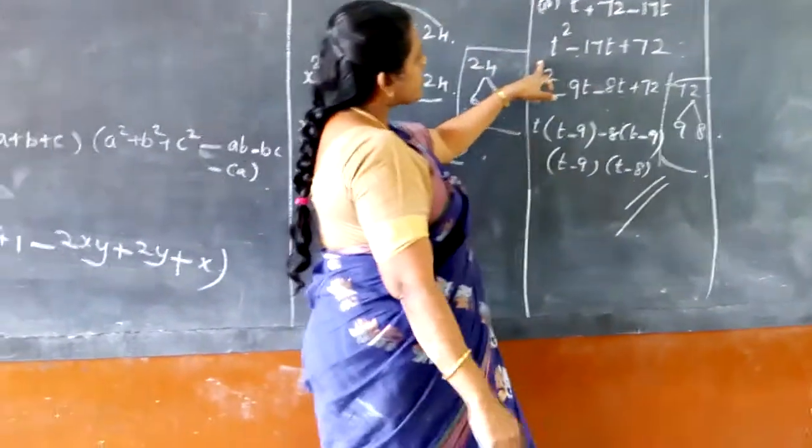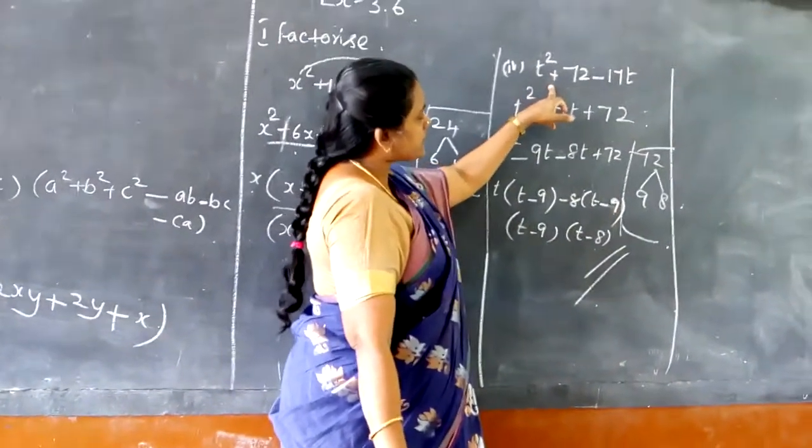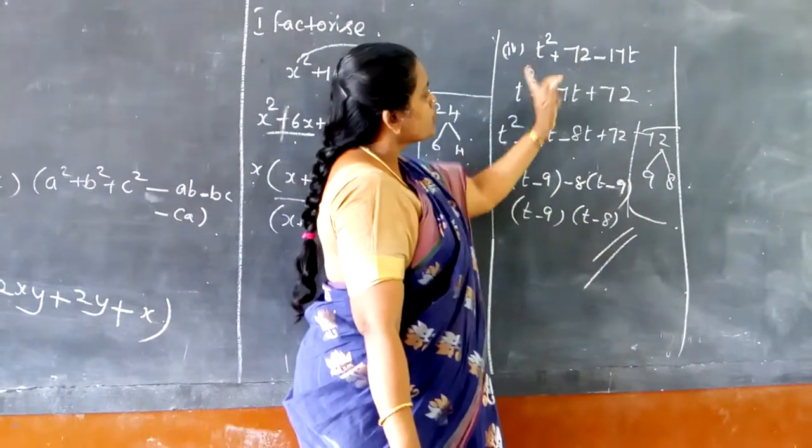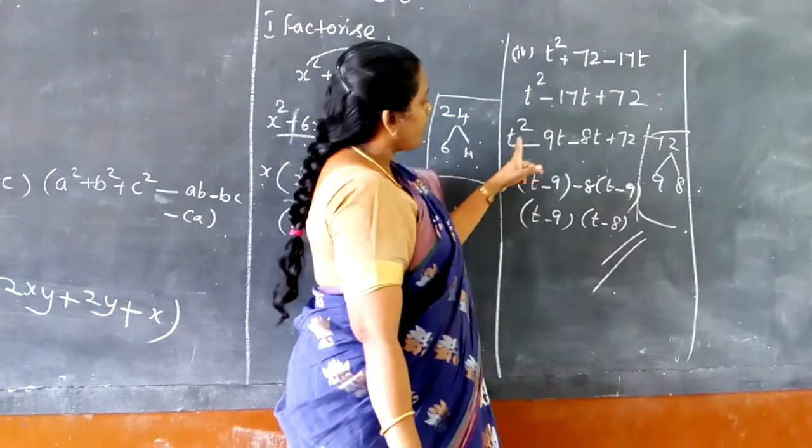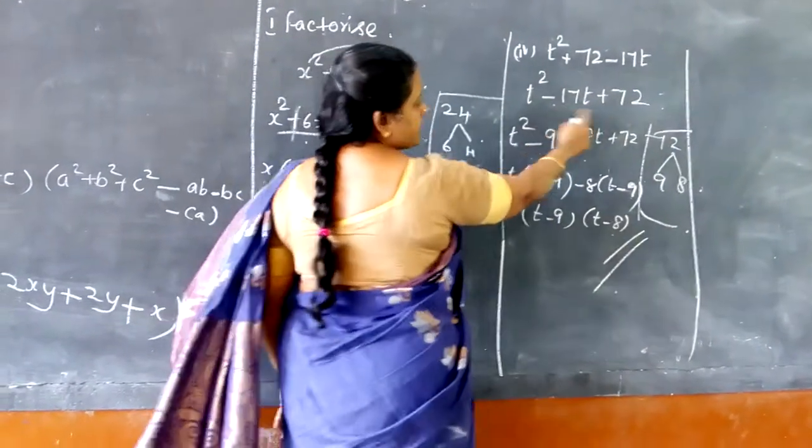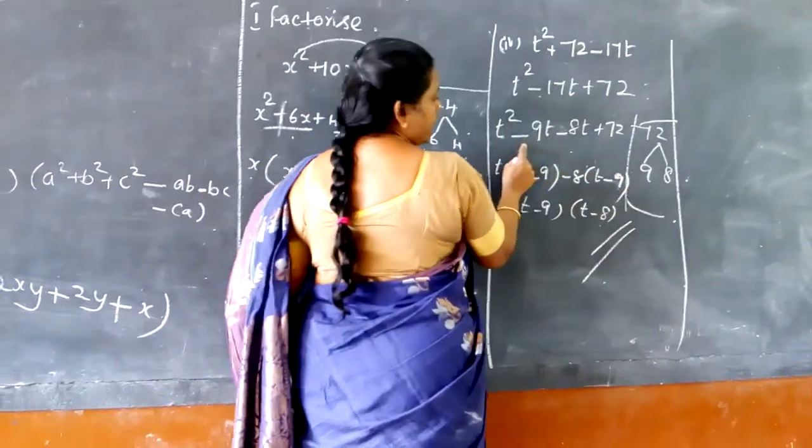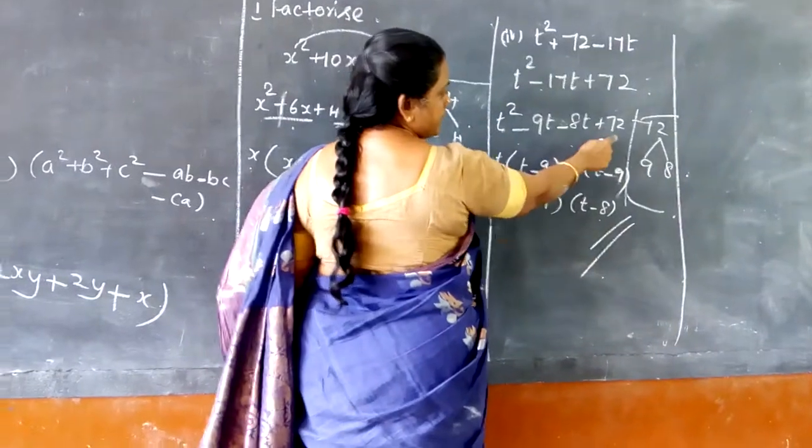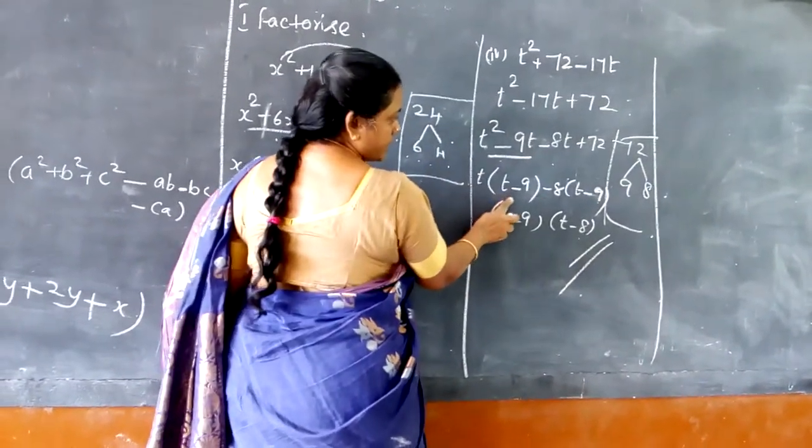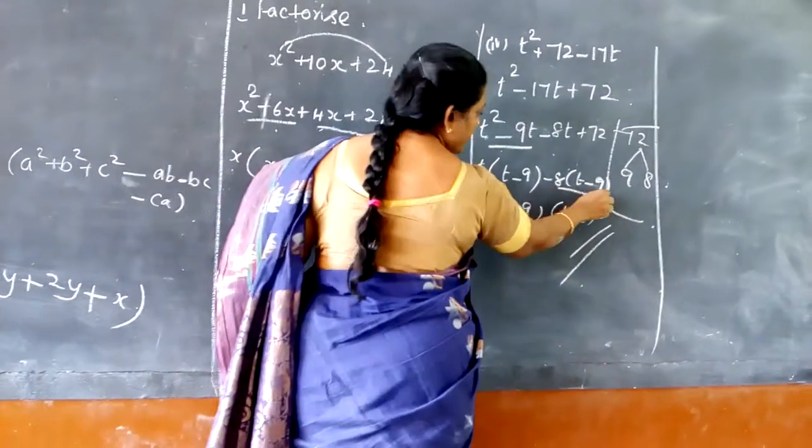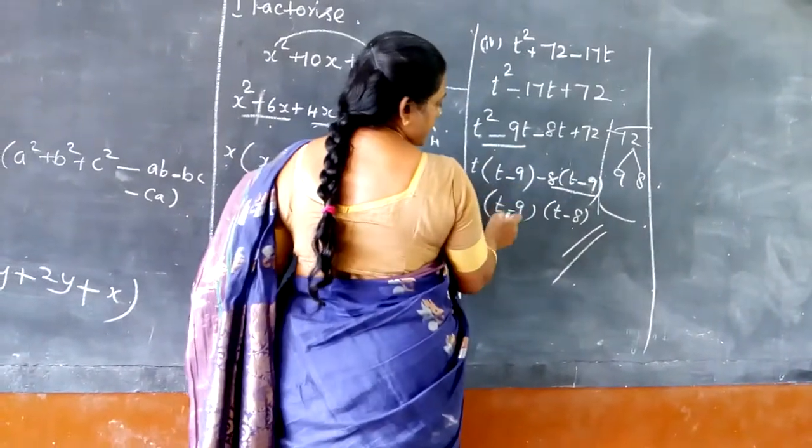And the fourth equation is t² - 17t + 72. This can be written in the form of 9 and 8, so minus 9t and minus 8t plus 72. T into (t - 9) and (t - 8), which gives you the answer.